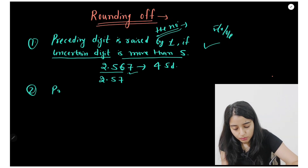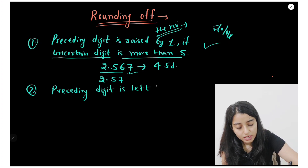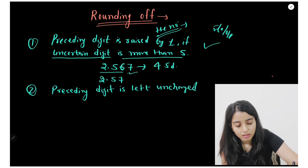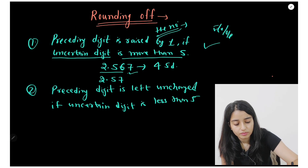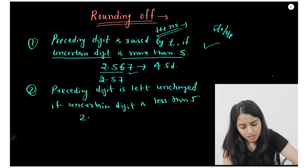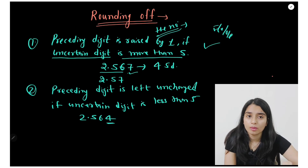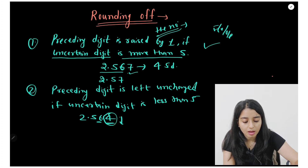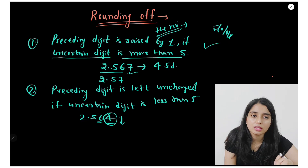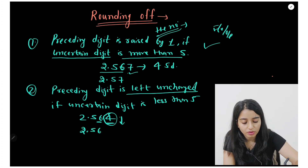The second rule is: the preceding digit is left unchanged if the uncertain digit is less than five. For example, take the number 2.564. The uncertain digit is 4, which is less than five, so we make no changes to the preceding digit. The result is simply 2.56.